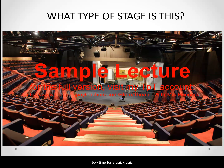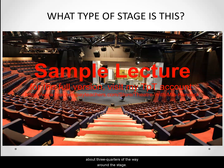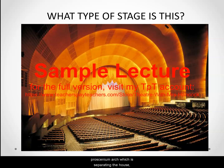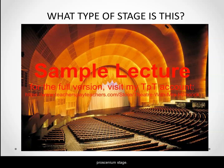Now time for a quick quiz. What type of stage is this? If you said thrust, you are correct — the stage thrusts out into the audience, which is seated about three quarters of the way around the stage. What type of stage is this? Here we have a small apron sticking out in front of a proscenium arch, which is separating the house or audience seating area from the rest of the stage. This is Radio City Music Hall in New York City, and it is a proscenium stage.